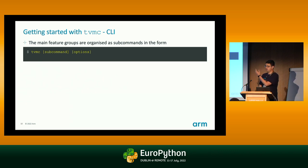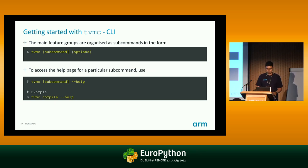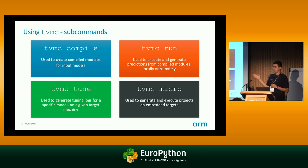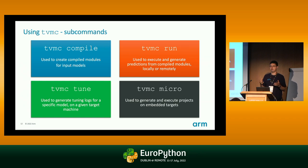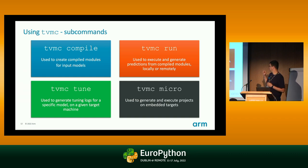The command line tool uses subcommands. There are four subcommands today. TVMC compile translates a given input model — for example, an ONNX model — and builds a compiled version of that model. It uses LLVM by default to generate native code, so you will be running natively on your own machine, with the model translated from the high-level framework.